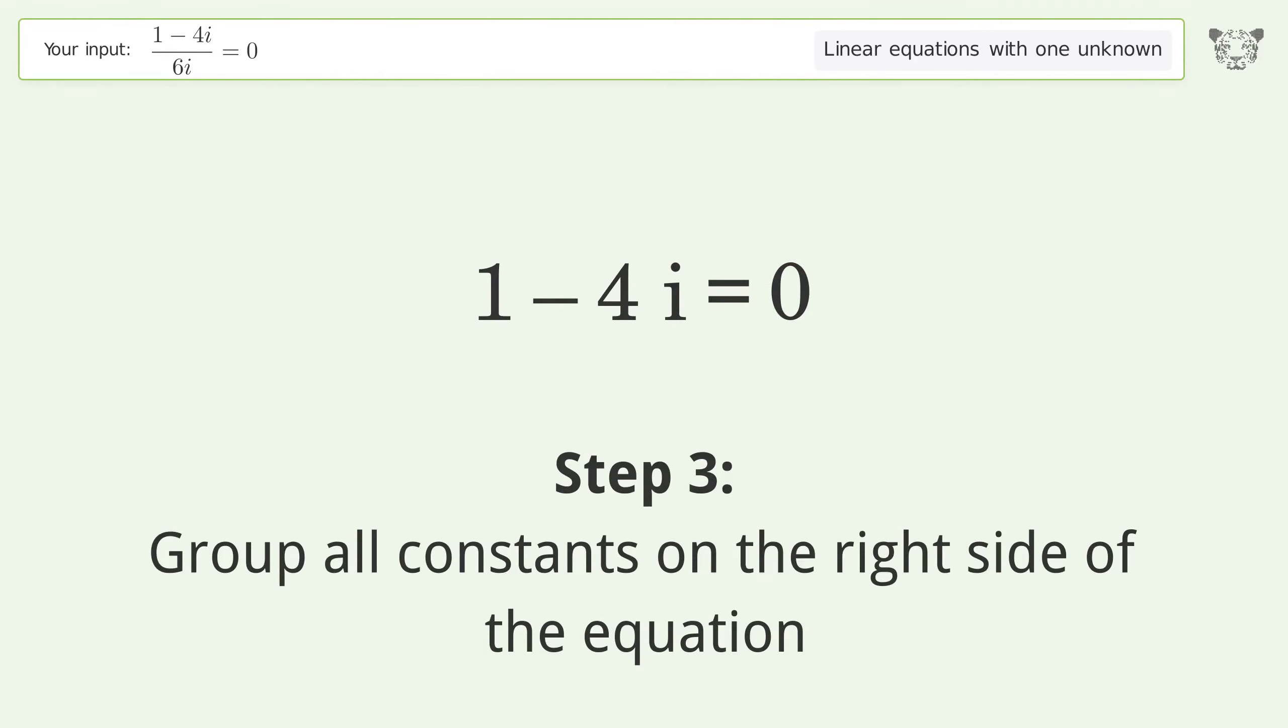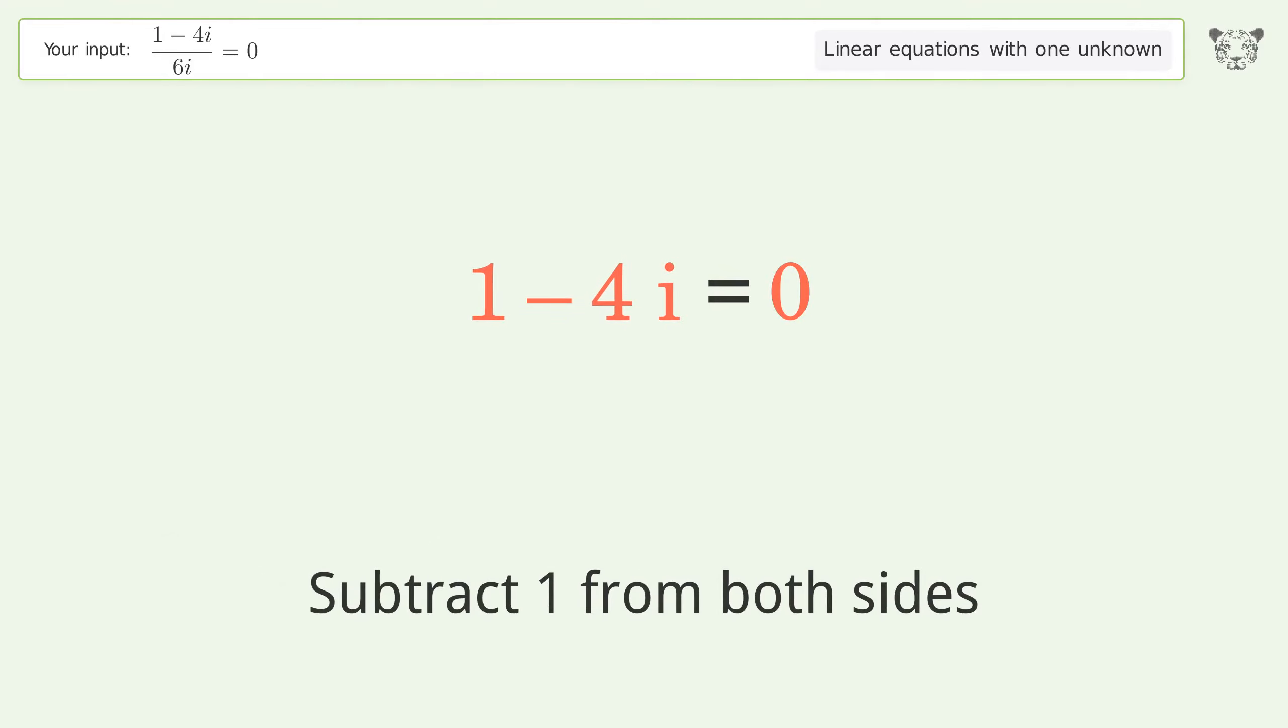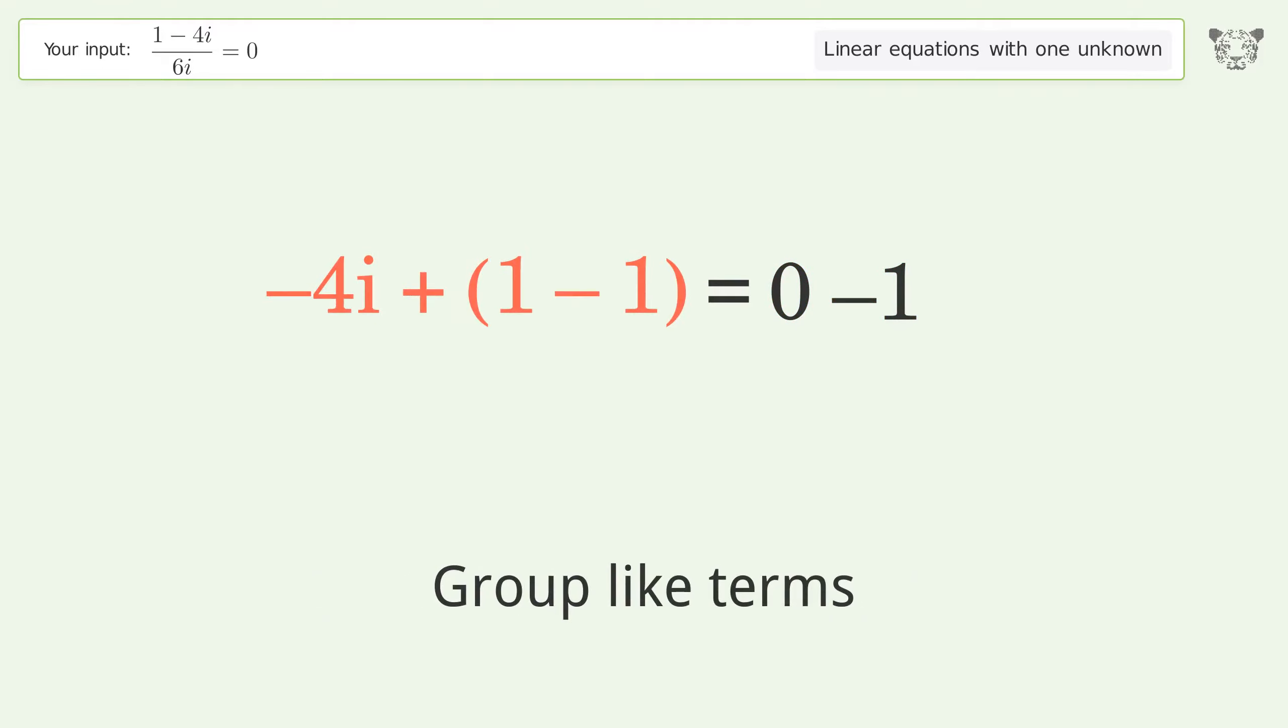Group all constants on the right side of the equation. Subtract one from both sides. Group like terms. Simplify the arithmetic.